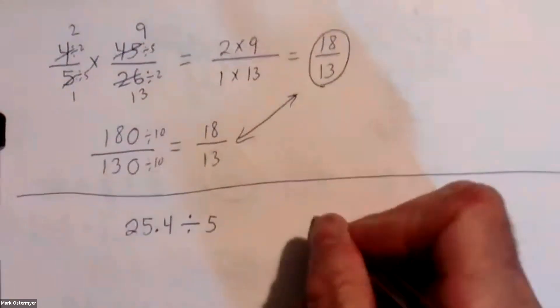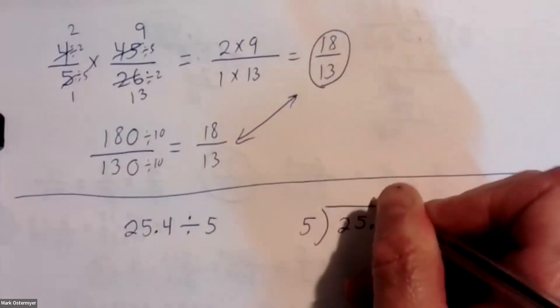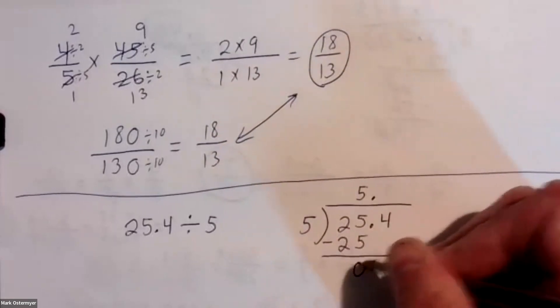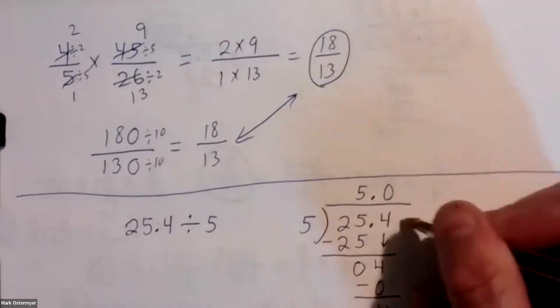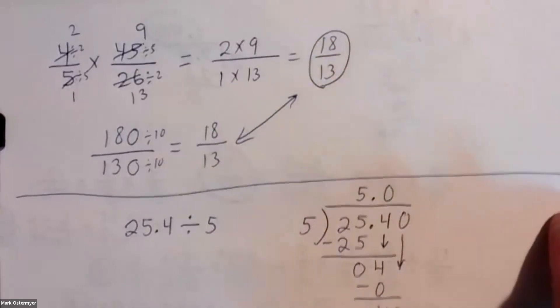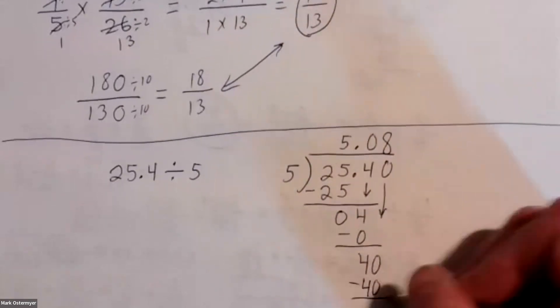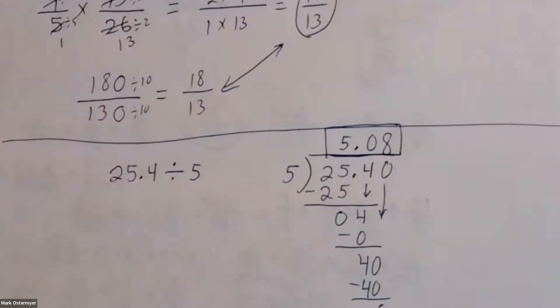Number eight will be a decimal divided by — we're dividing five into twenty-five and four tenths. Five divides into twenty-five five times. Subtract off, get zero, bring down four. Five divides into four zero times. Five divides into forty eight times — zero remainder. Your answer is five point zero eight.